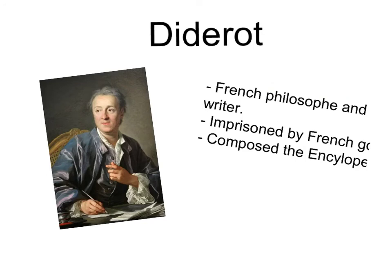Diderot was another French philosopher and contemporary of Voltaire. He was also imprisoned by the French government for many of his writings, but he is most famous for the composition of the Encyclopedia — a multi-volume body of work designed to bring together as much knowledge about science, philosophy, and government as possible, written by the various philosophers and scientific investigators of the time.